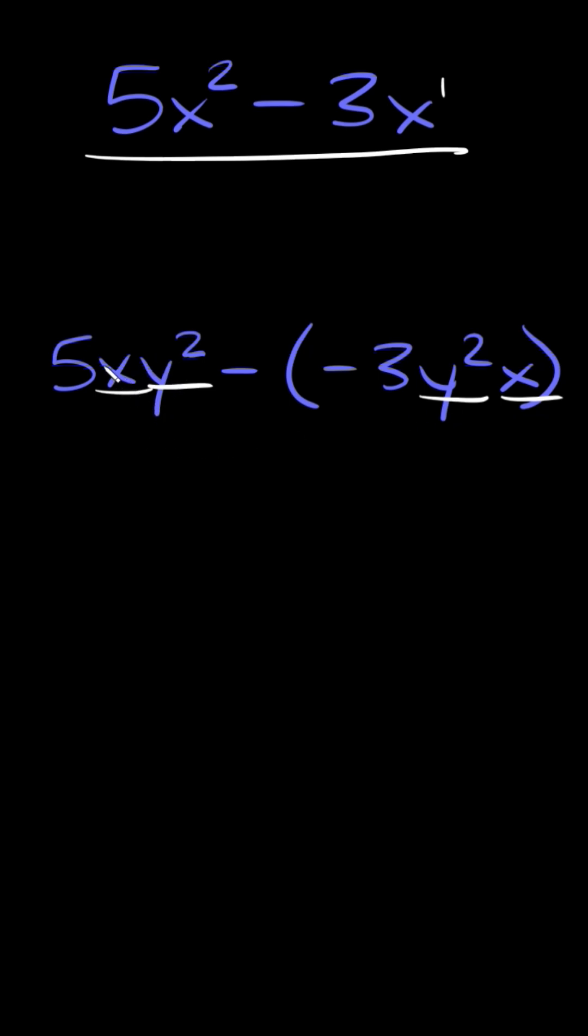So even though they're in different orders - this one's xy² and this one's y²x - that's totally fine. It doesn't matter because with multiplication, order doesn't matter. x times y is the same thing as y times x.